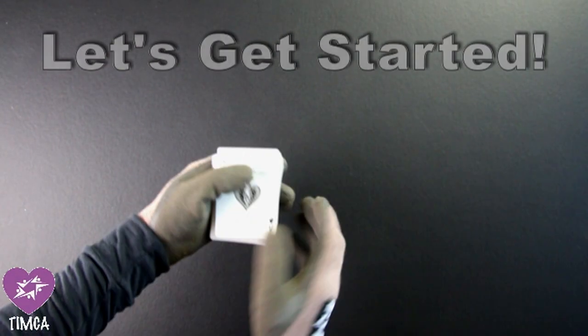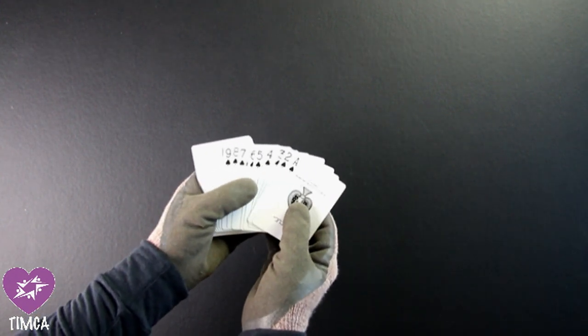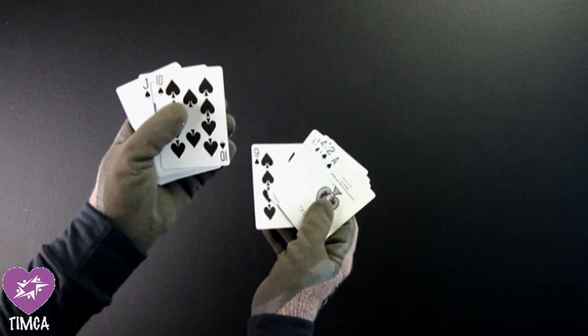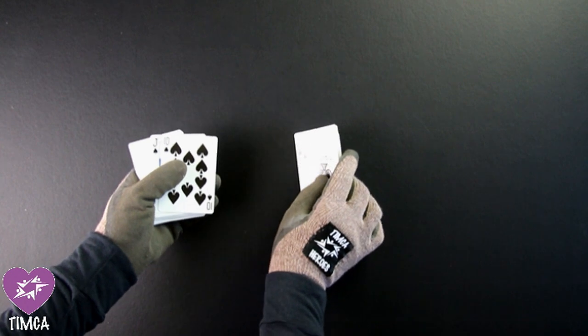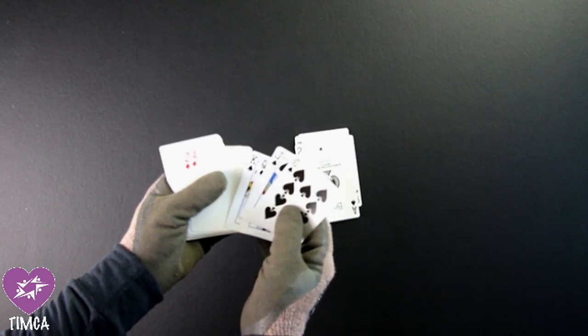From your pack, separate out two sets of Ace to 9. In this instance we have chosen to separate out the cards from Ace to 9 in the suit of spades, and we then discard 10 to King.